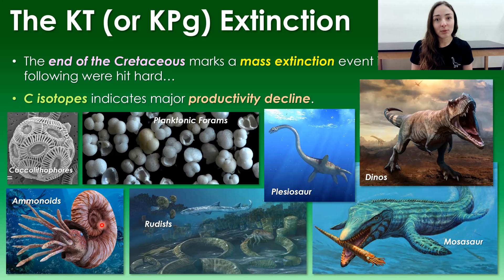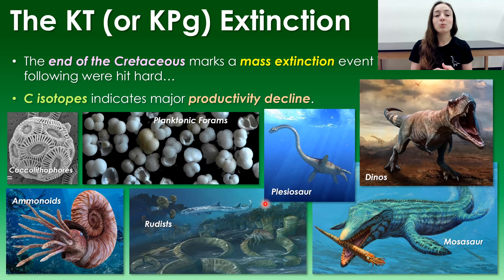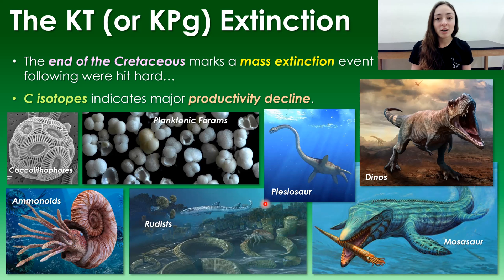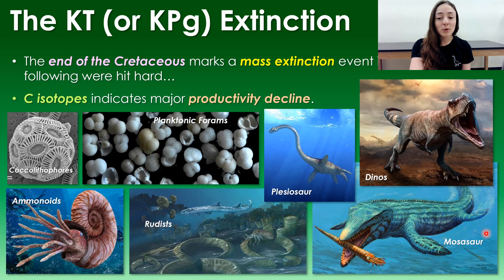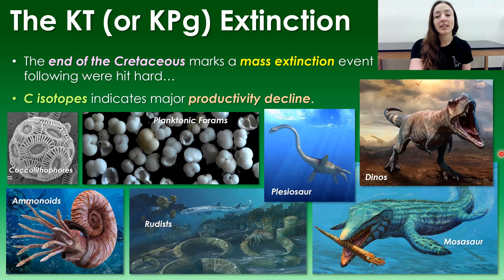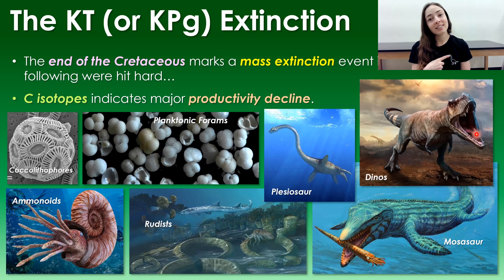Ammonoids — cephalopods that were major players in the oceans — also went extinct, which included rudists, which are mollusks that were the dominant reef-building organisms in the Cretaceous due to ocean chemistry at the time. And of course, our major vertebrates of the Mesozoic and Cretaceous specifically — like the marine reptile predators, the mosasaur, the plesiosaur, and of course our dinosaurs.